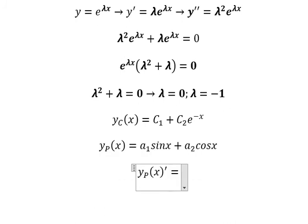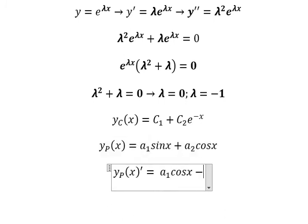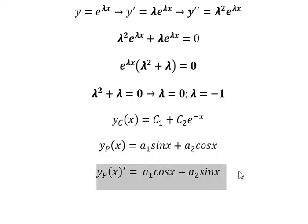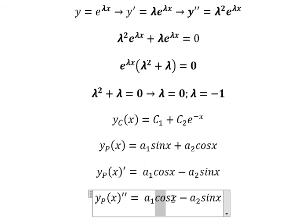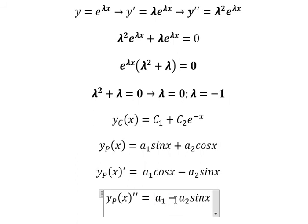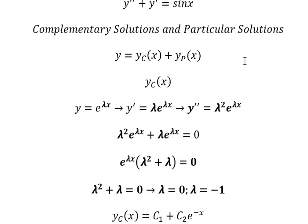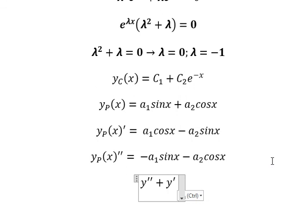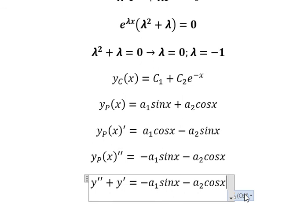Taking the first derivative of y_p gives a1 cosine x minus a2 sine x. Taking the second derivative gives negative a1 sine x minus a2 cosine x.